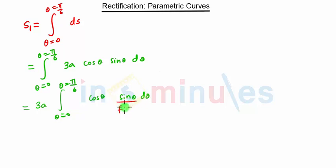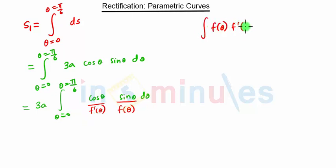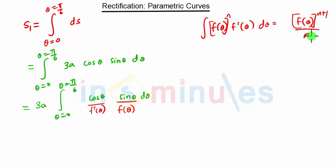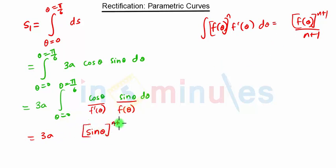Looking at this term, if we take sinθ as f(θ), then cosθ will be f'(θ). We apply the direct formula: the integral of f(θ)·f'(θ)·[f(θ)]^n dθ equals [f(θ)]^(n+1) / (n+1). In our case, n is 1 and f(θ) is sinθ, so we get sin²θ / 2.